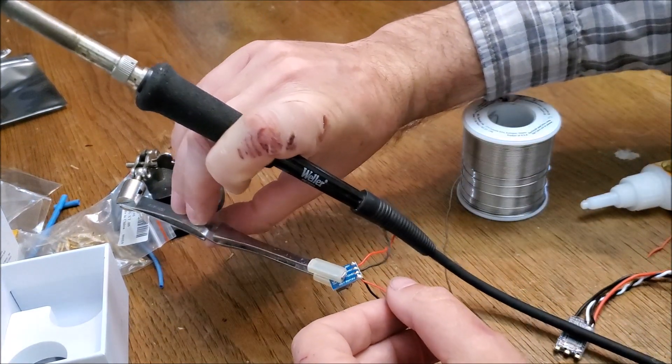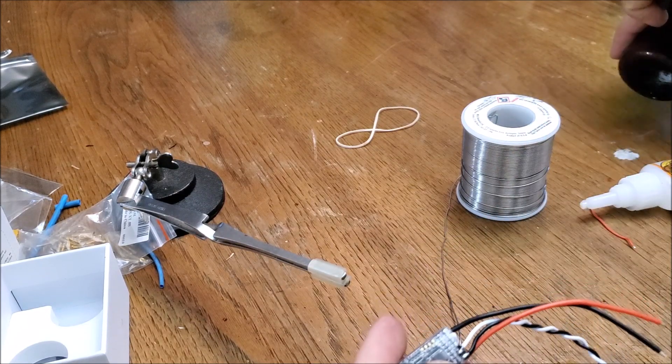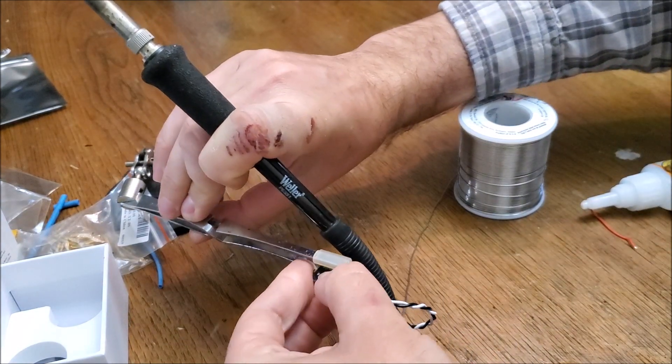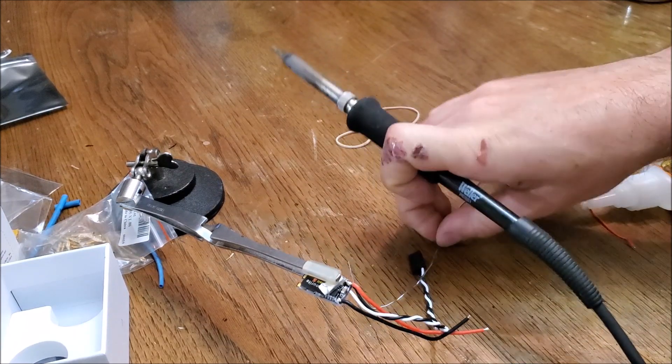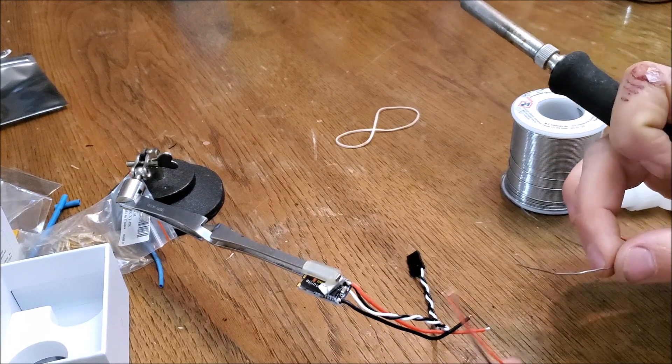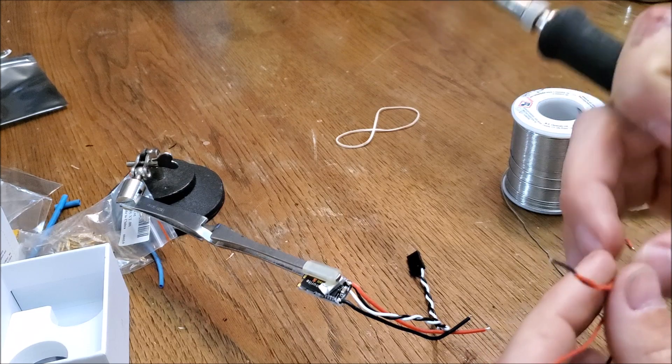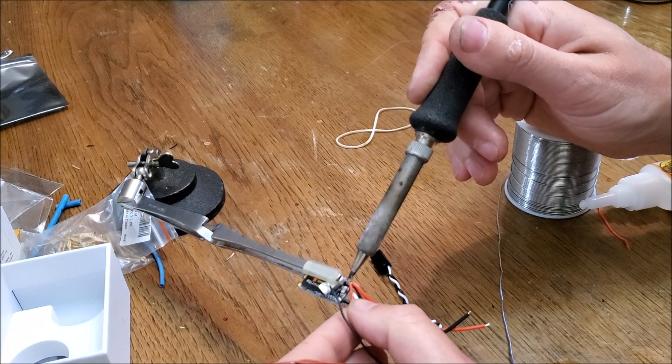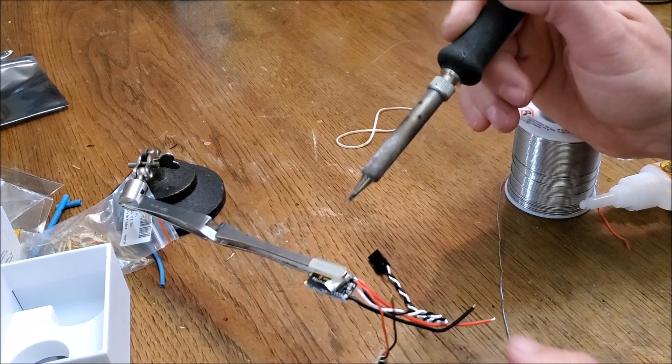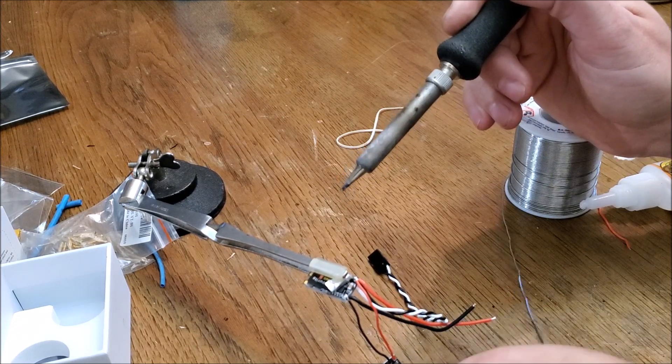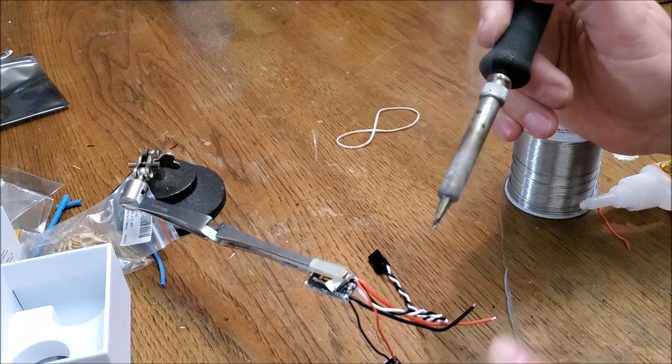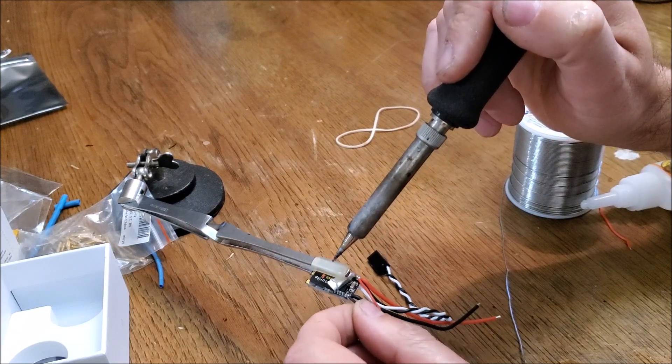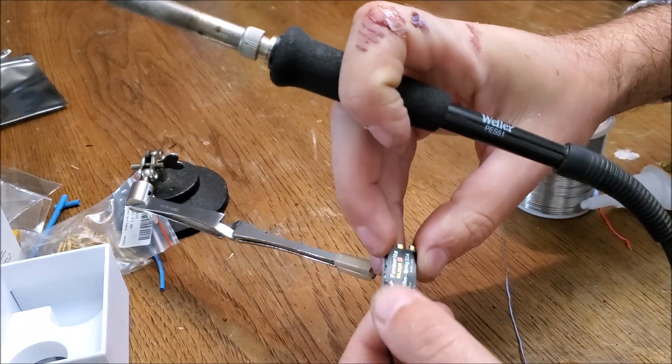So next I'm going to bring our speed controller into play. I have peeled back some of the shrink tubing on this. Excuse everything falling over in the background. And I want my input of 12 volts coming in here, and so I'm just soldering that onto this input terminal from my battery. I'm going to do the same thing on the ground side. Close that back up.